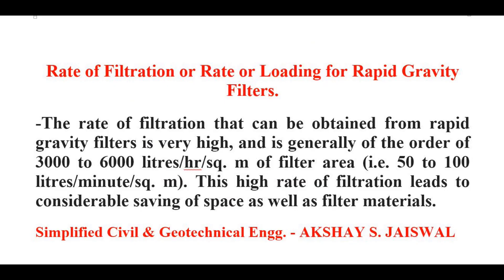Now we will see rate of filtration. The rate of filtration that can be obtained from rapid gravity filters is very high and is generally of the order of 3000 to 6000 liters per hour per meter square of filter area, that is 50 to 100 liters per minute per meter square. This high rate of filtration leads to considerable saving of space as well as filter materials. Rapid gravity filters se filter hokar milne wale paani ki matra kaafi zyada hoti hai. Is high filtration rate ke karan filter materials aur space ki bachat hoti hai.